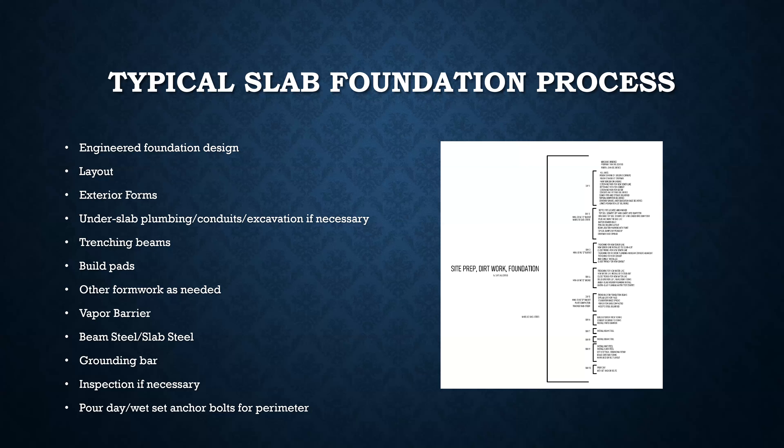The vapor barrier also keeps unwanted gases from seeping through the soil and concrete into the house. Once that's down, you put all the steel in — beam steel inside the beam hollow spaces, slab steel across the whole slab, tie everything together. Make sure all steel is raised off the ground because steel in contact with the ground will rust and the rust can travel through the entire connected foundation. You'll also want a grounding bar attached to the slab steel so the electrical system can be grounded into it — placed wherever the electrician intends to put the panel.